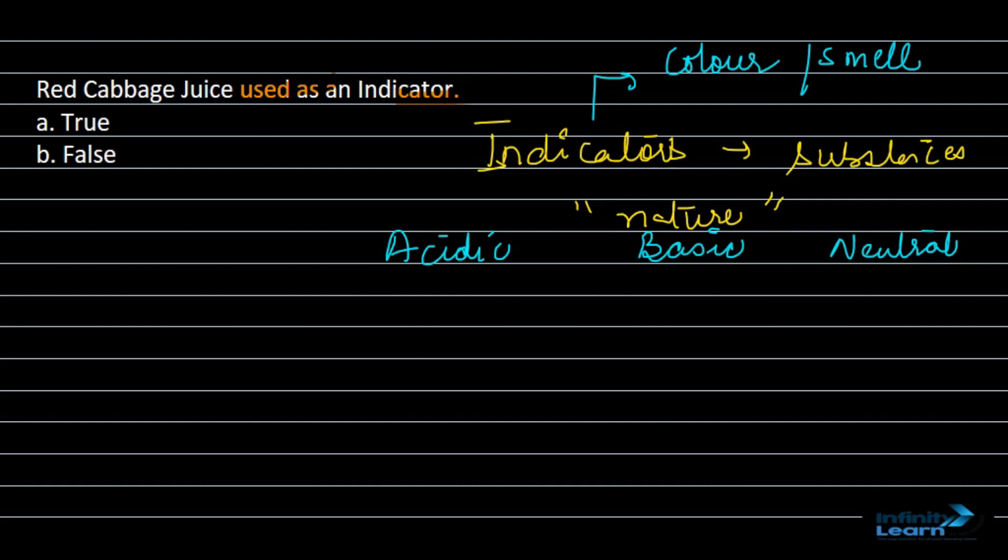What kind of change they bring helps us understand whether the given substance is acidic or basic. Talking about red cabbage juice, it is a natural indicator. Natural means it has a natural origin.